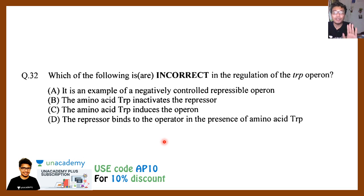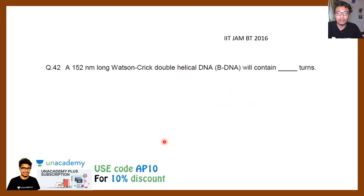2016 has a NAT type question. It says a 152 nanometer long Watson-Crick paired B-form of DNA will contain how many number of turns? We have 152 nanometer stretch. We know one DNA turn is 34 angstrom or 3.4 nanometer long. So we just have to divide 152 by 3.4, and if we do the math it would come somewhere around - let me see - would come around 40, yeah, 45 in sort of like whole numbers.